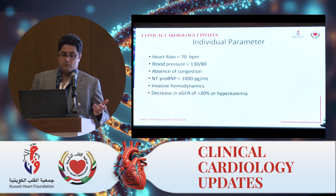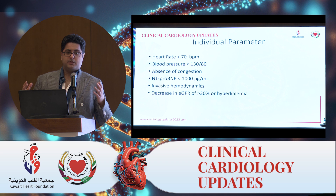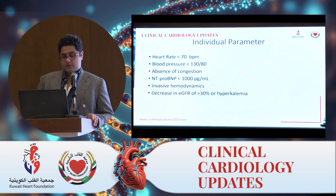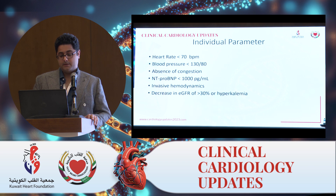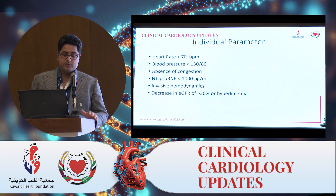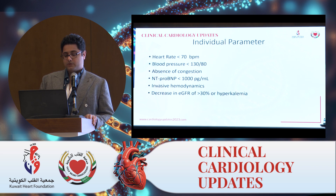We've come to what is considered goal-directed medical therapy, with individual parameters. For example, a heart rate of less than 70 means you're achieving adequate beta-1 blockade. A blood pressure less than 130/80 means you're achieving good medical therapy. We also look at absence of congestion, a pro-BNP of less than 1000, and invasive hemodynamics to assess filling pressures and cardiac index.